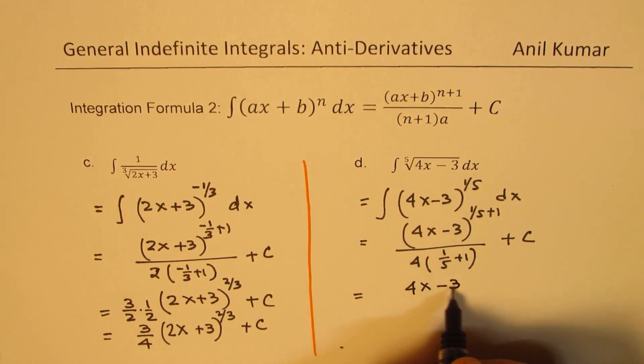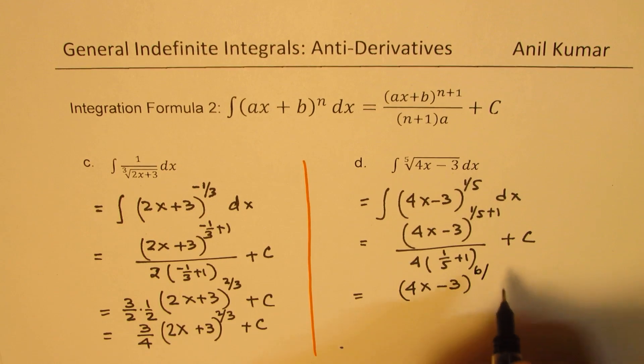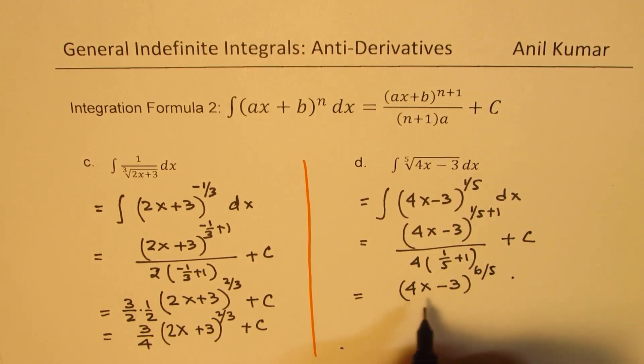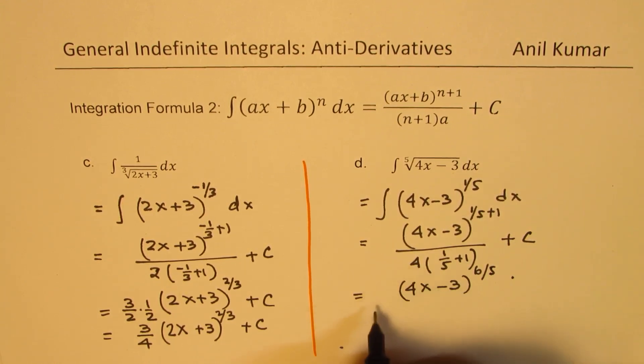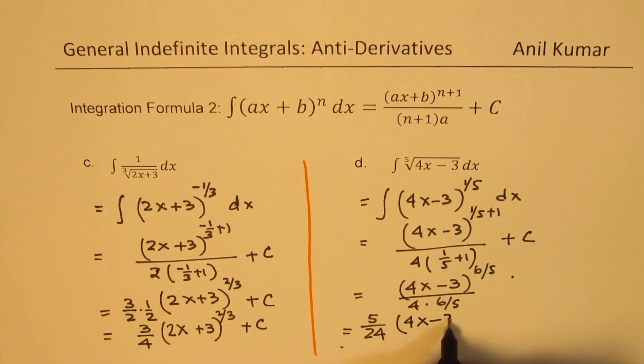We get 4x minus 3 to the power of 6 over 5. And 1 over 4, and then this is, let's go two steps. So we have 1 over 4 here times 6 over 5. That will go in the numerator. We'll get this result as, we could write this as 5 over 4 times 6, which is 24, and we have 4x minus 3.